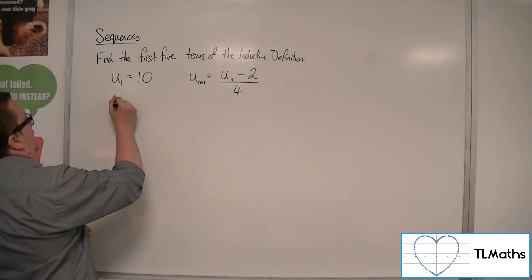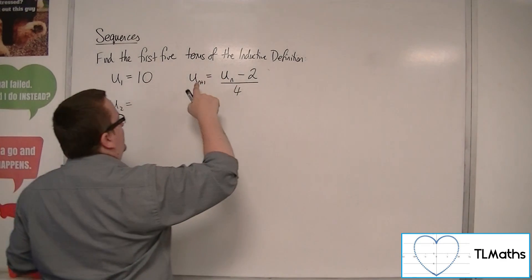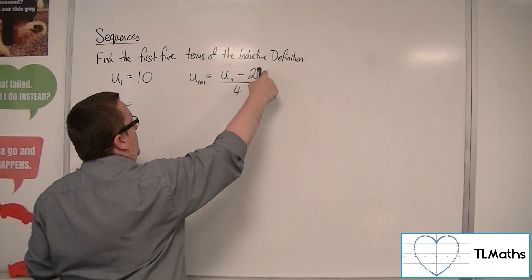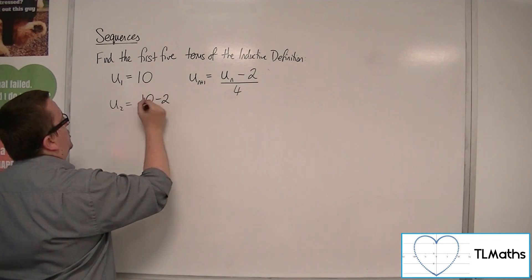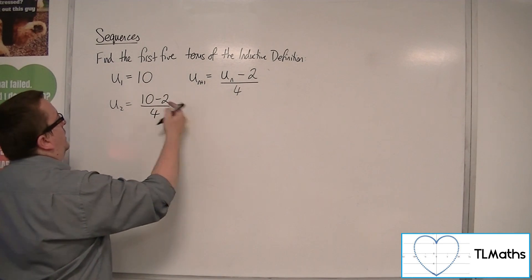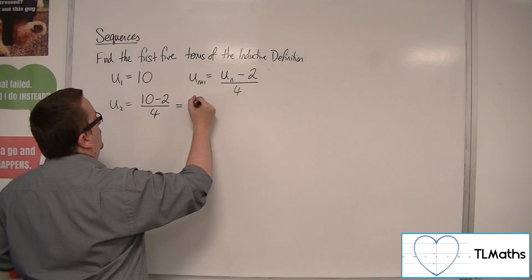The second term, to get to the next term, we take the previous term, take away 2, then divide by 4. So 10 take away 2, divide by 4. So 8 over 4, which is 2.